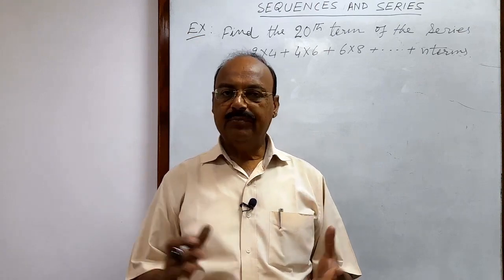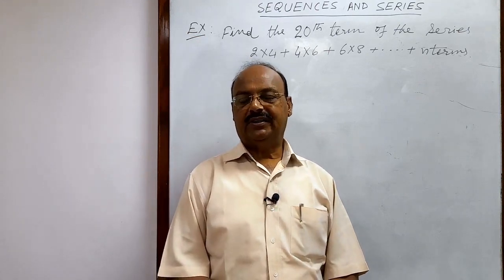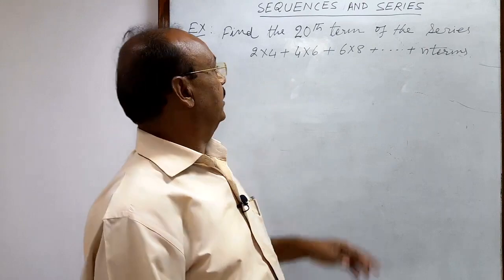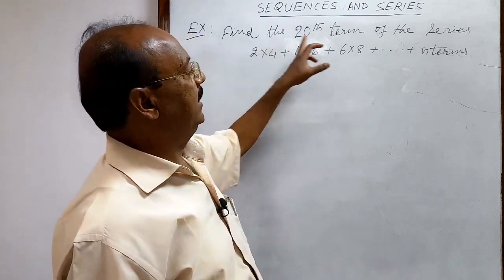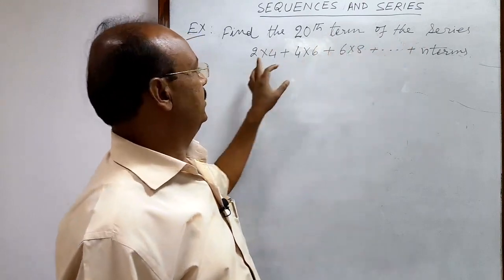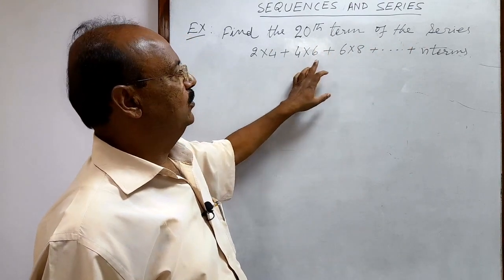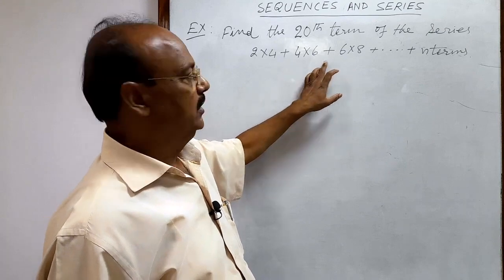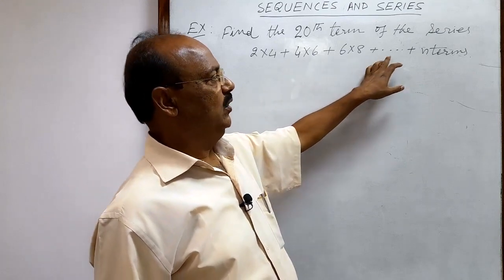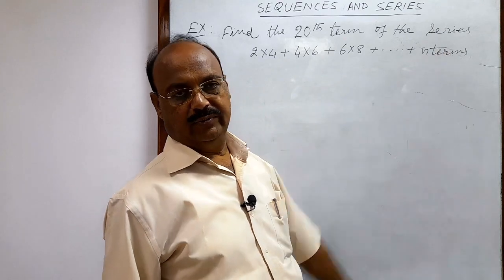Here we will see a very simple question from the chapter sequences and series. The question is: find the 20th term of the series 2×4 + 4×6 + 6×8 + … up to n terms.